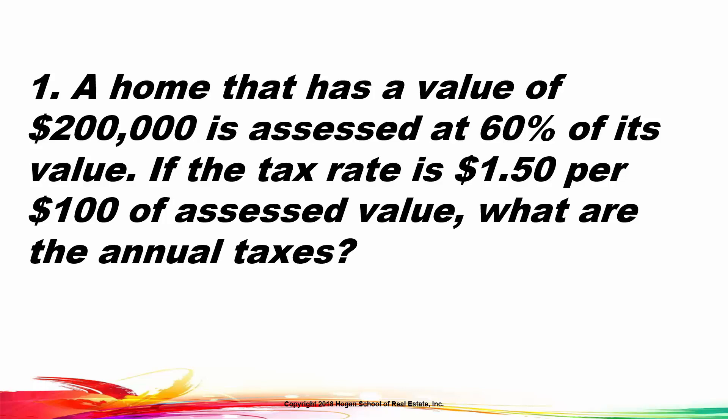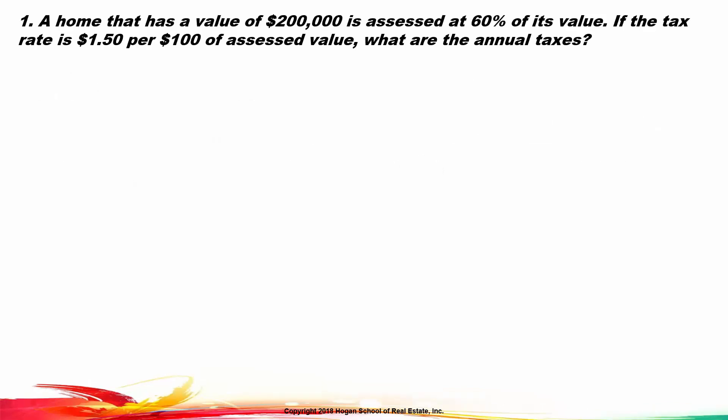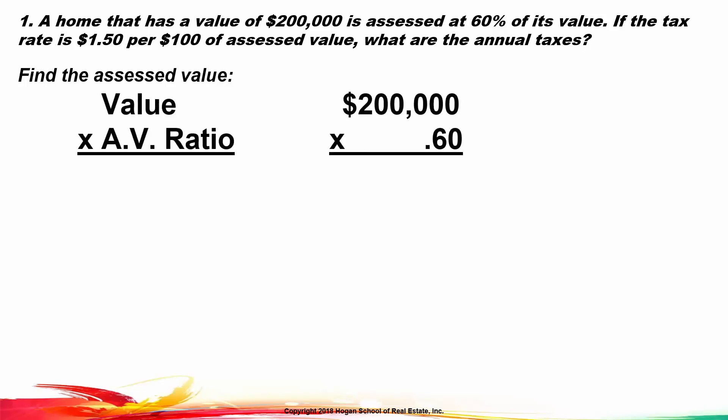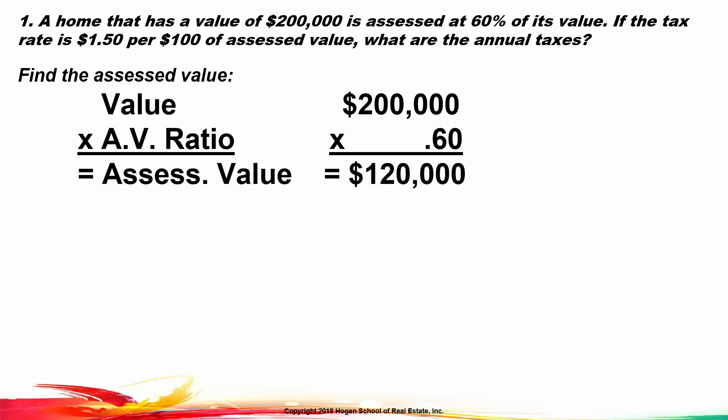In this problem, the limited property value is not mentioned, and of course this assessed value ratio of 60% is nothing like what we have here in Arizona. So we find the assessed value by taking the value — $200,000 — times the assessed value ratio. That gives us an assessed value of $120,000.